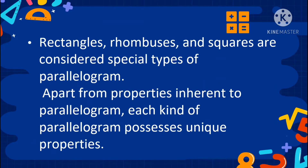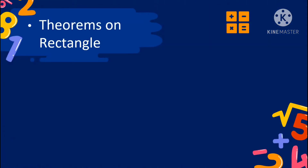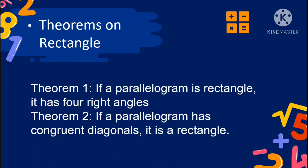Rectangles, rhombuses, and squares are considered special types of parallelograms. Apart from properties inherent to parallelograms, each kind of parallelogram possesses unique properties. Let us proceed to theorems on rectangle. Theorem number 1: if a parallelogram is a rectangle, it has 4 right angles.